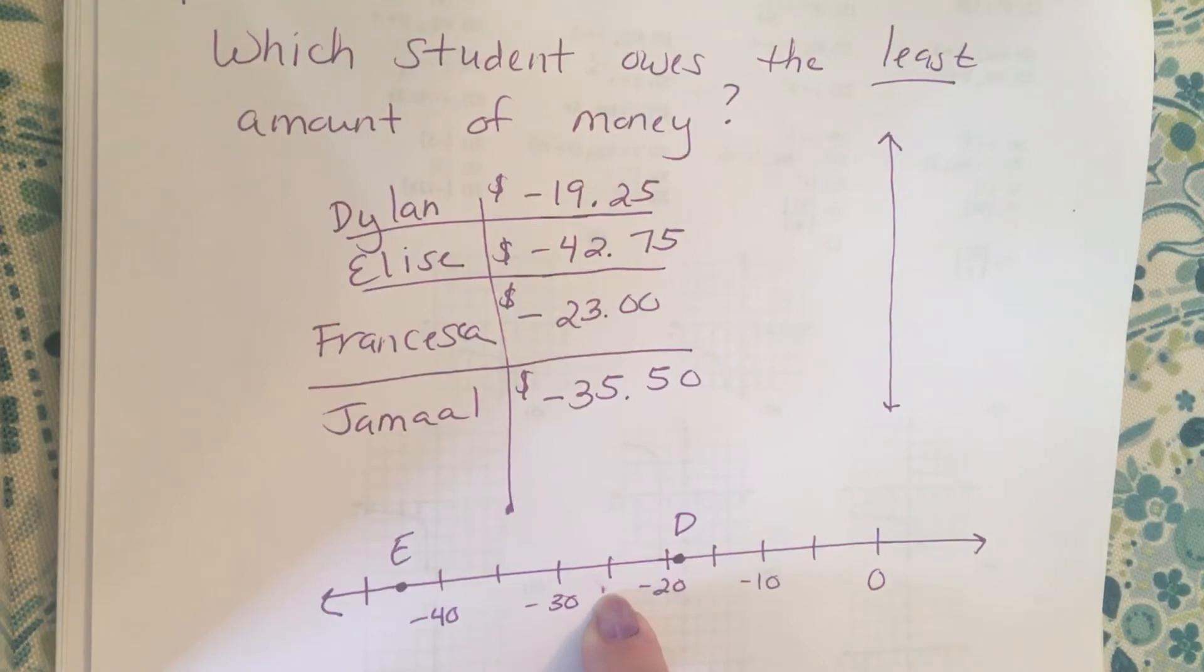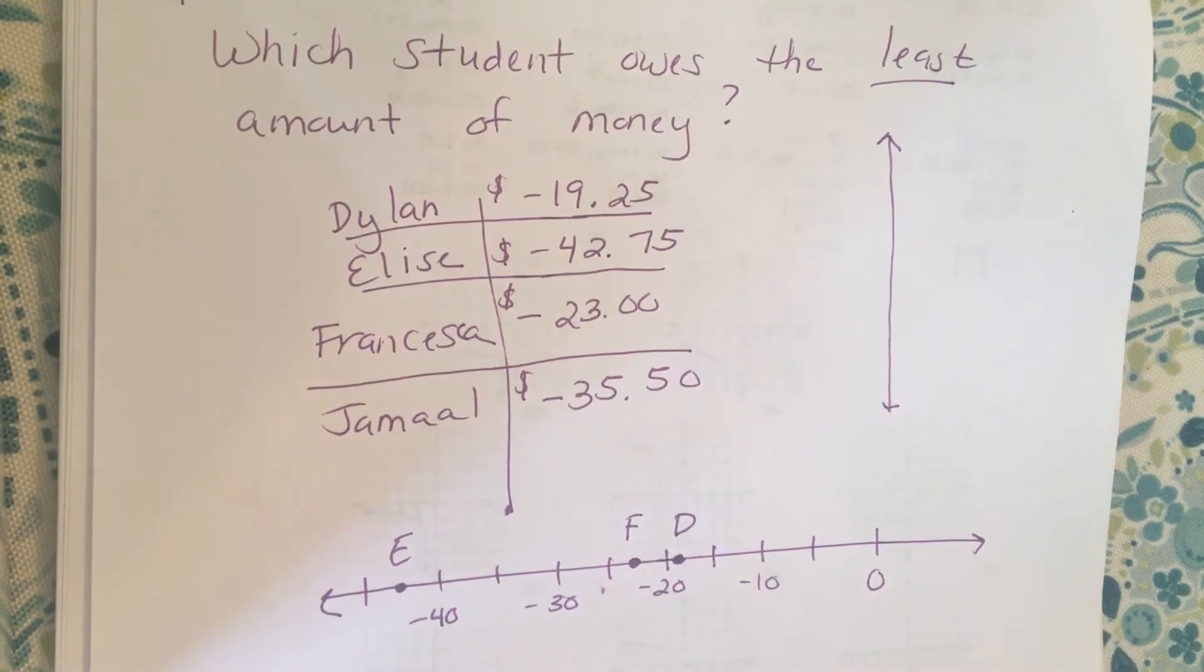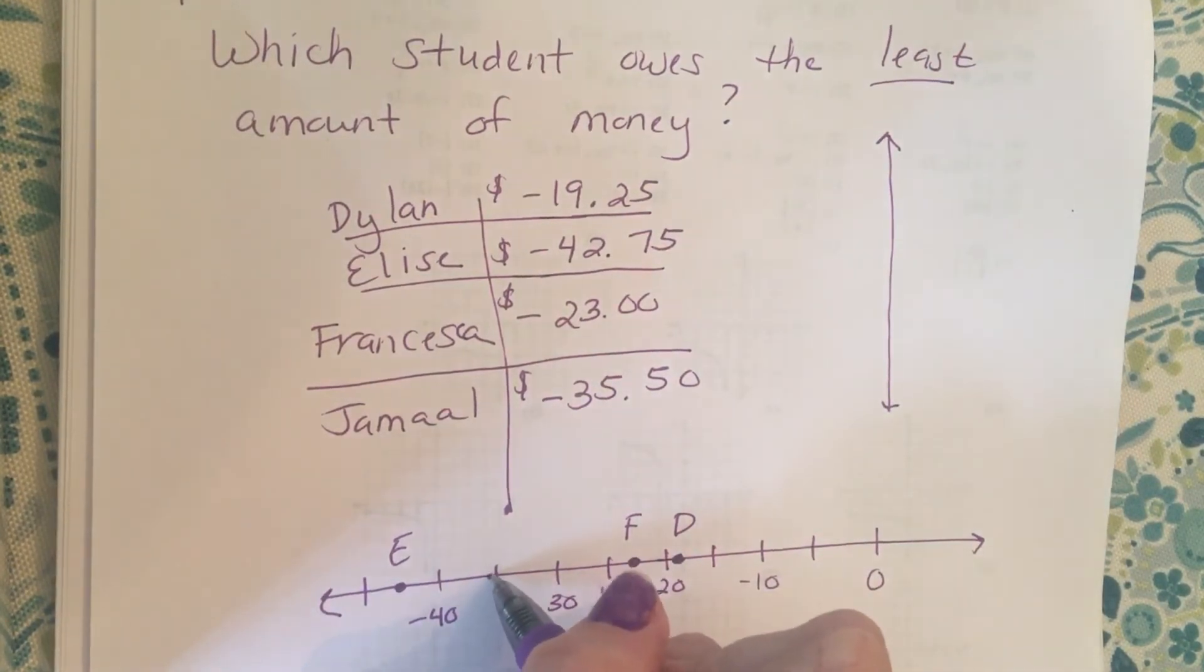And then Jamal is negative 35 dollars and 50 cents. He owes 35 dollars and 50 cents, so here's 35 dollars, so he's gonna be just after 35 dollars.